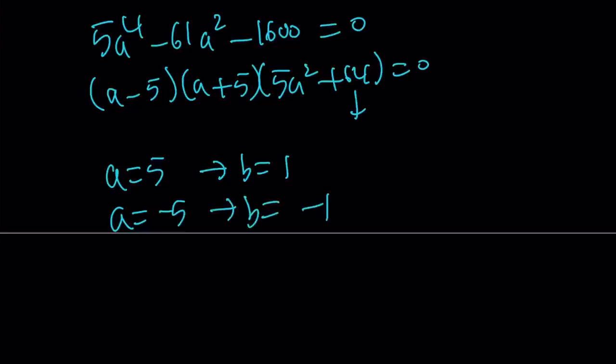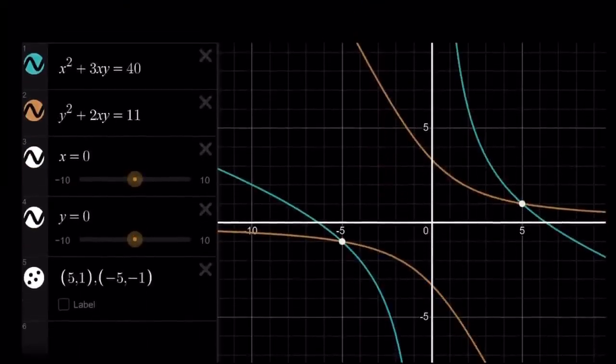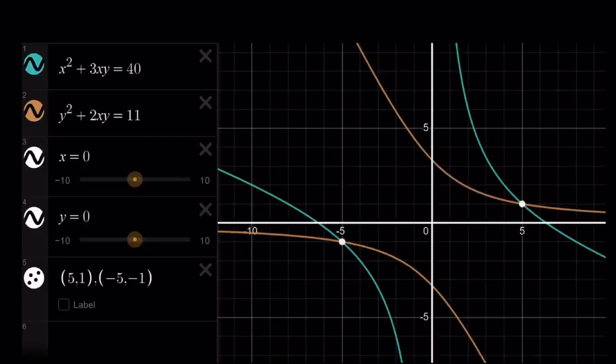Let's take a look at the graph and we'll wrap it up. The graph I made for you uses x instead of a, and y instead of b, but it's the same thing. x squared plus 3xy equals 40. Those are two rational functions. They intersect at 5, 1 and negative 5, negative 1, which are the a, b values. This brings us to the end of this video.